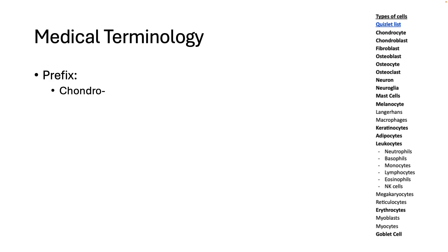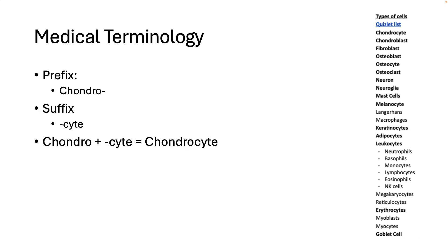Changing the prefix simply changes the type of cell we're talking about. So for example, if you change the prefix to 'chondro' — chondro means cartilage — and still use the suffix '-cyte,' you end up with a chondrocyte. So instead of an osteocyte, which is a mature bone cell, a chondrocyte is a mature cartilage cell.